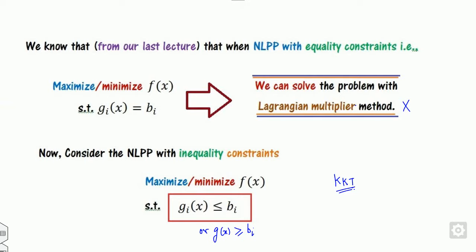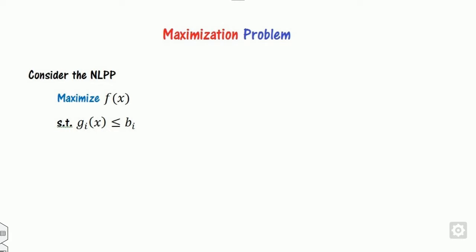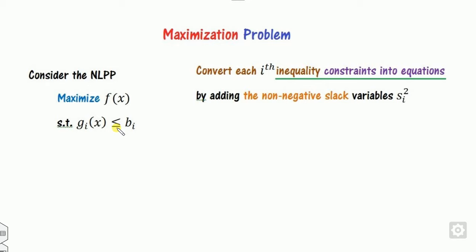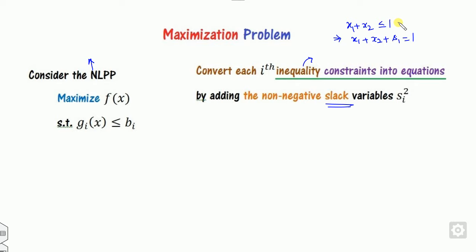How can we solve them? So what are the necessary and sufficient conditions? I consider the problem of maximization first — we can do the same thing for minimization. I consider the problem as maximization with constraints as less than sign. All of you know that if I say x1 plus x2 is less than or equal to 1, you can add the slack variable s1 to make it into an equality constraint. So for each i-th constraint, we can convert this inequality into an equation by adding a non-negative slack variable.